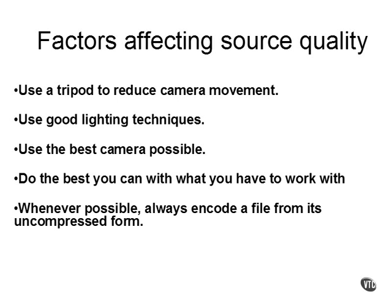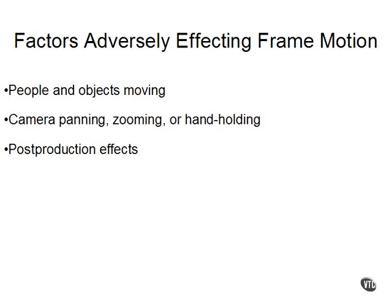Frame motion is another factor that you need to consider in your encoding work. It is the percentage of pixels that change from one frame to another. This change can result from a person or object moving in the camera view, camera effects, or post-production effects. People and objects moving in the camera view can include someone walking past the lens, tree leaves blowing in the wind, cars driving by, or an extreme close-up of a face. Camera effects such as camera panning, zooming, or hand-holding result in almost 100% pixel change from frame to frame and will yield very disappointing results.